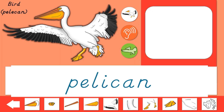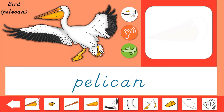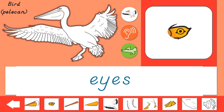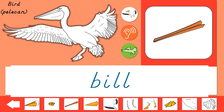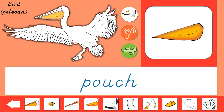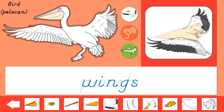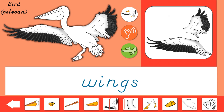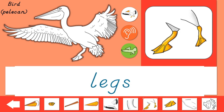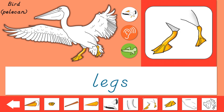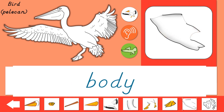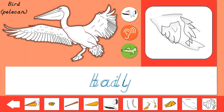Let's learn the parts of a pelican. Head, eyes, bill, pouch, wings, neck, legs, webbed feet, body, tail.